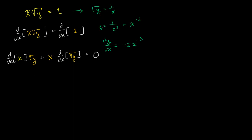So what does this simplify to? Well, the derivative with respect to x of x is just 1, so we're just going to be left with the square root of y right over here.